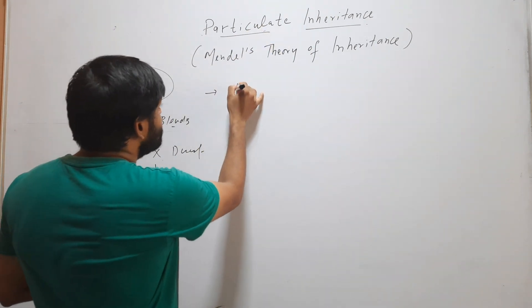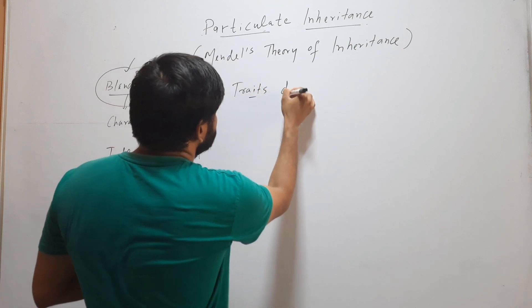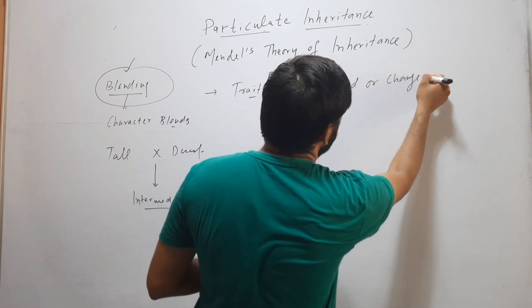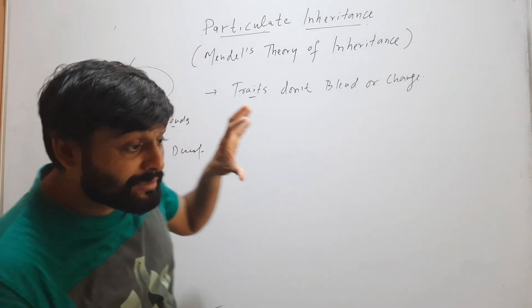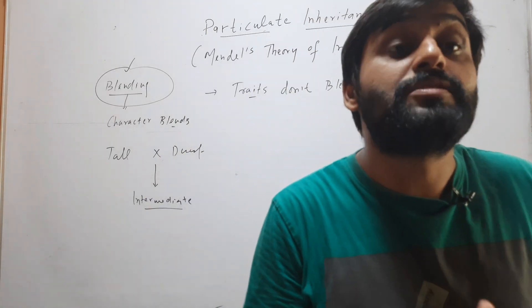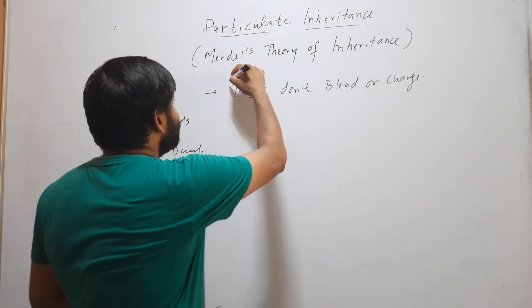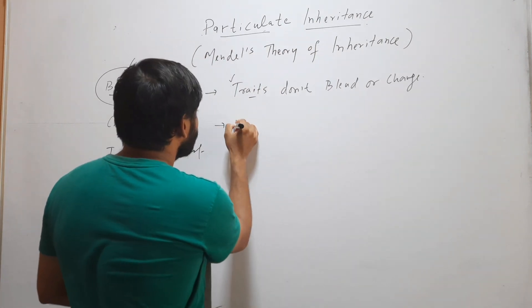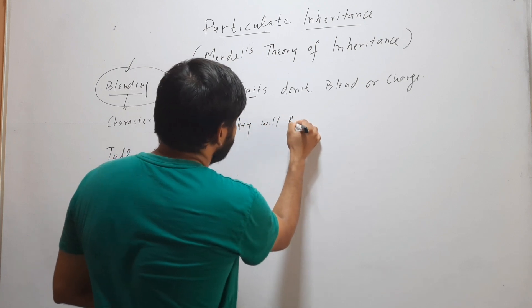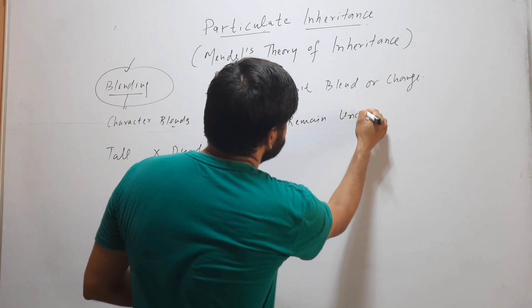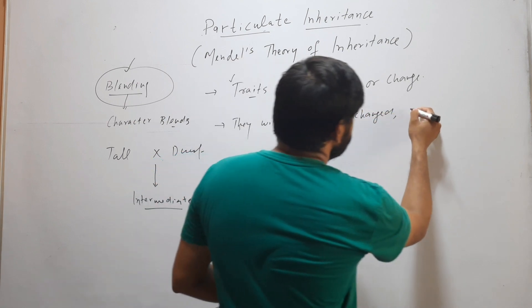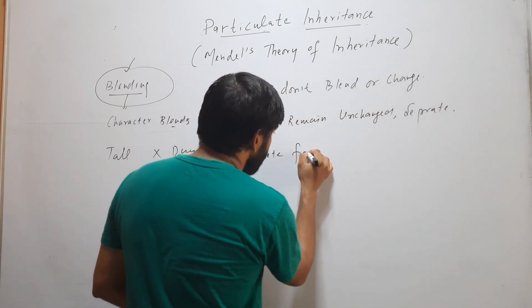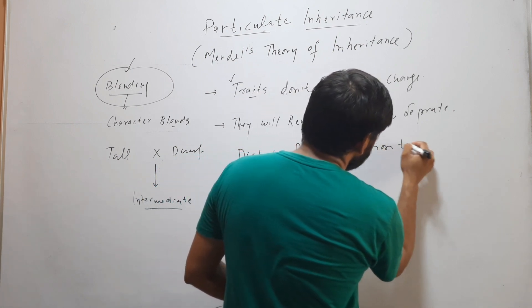This particulate theory says that traits don't blend or change. While the blending theory says traits blend or change from generation to generation, Mendel says that traits don't blend or change — they will remain unchanged and separate, or discrete, from generation to generation.